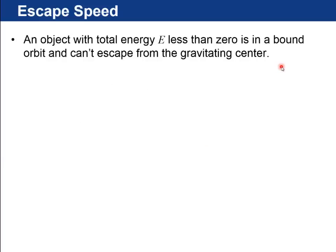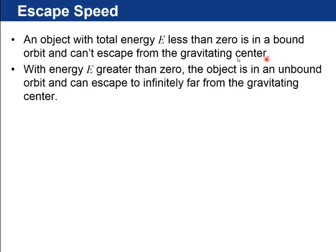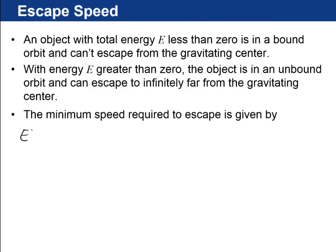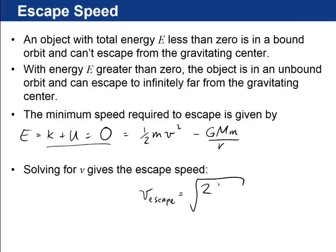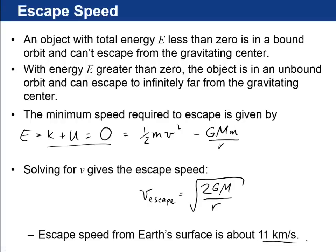Okay let's figure out escape speed. An object with total energy E that's less than zero is in a bound orbit and can't escape from the gravitating center. If the energy is greater than zero then the object is in an unbound orbit and can escape to infinity. So the minimum speed required to escape is going to be when the total energy which is kinetic plus potential equals zero. Kinetic is positive one half mv squared. Potential is negative Gmm over r. So you solve that out for the escape speed you get v escape is equal to the square root of 2 GM over r. And it turns out that here down on earth the escape speed is about 11 kilometers per second.